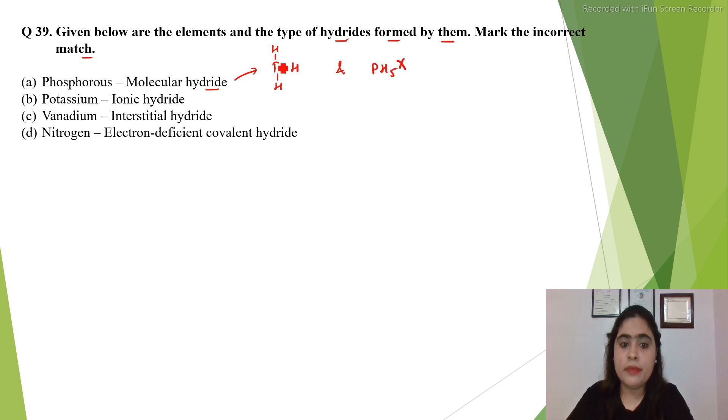PH5 is not formed because of the high atomization enthalpy of hydrogen and the high electron gain enthalpy of hydrogen. That's why the PH5 hydride is not formed.